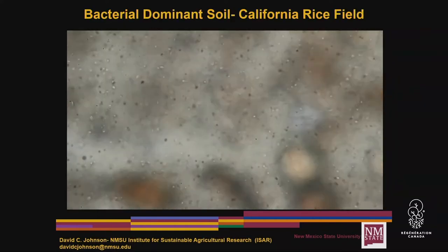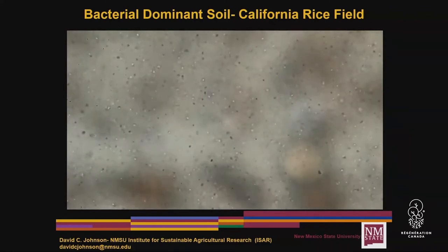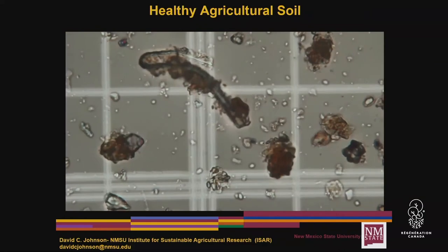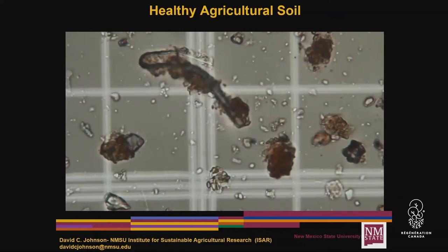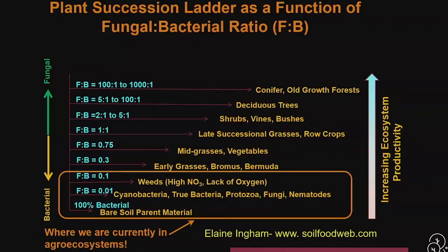This is what a bacterial dominant soil looks like — layer after layer of bacteria. That's a California rice field. This is what a healthy agricultural soil should look like: you have your organic matter here with fungi that have completely covered it, and your bacteria. This is what the redwood forest in California looks like — you can see a lot of organic matter, very few bacteria, and that's covered with fungi. We in agriculture are here.